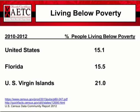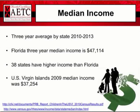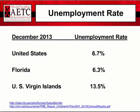Living in poverty between 2010 and 2012 in the United States is calculated at 15.1%. Florida is higher at 15.5%, and the U.S. Virgin Islands is significantly higher at 21%. The median income is a three-year average from 2010 to 2013; for Florida during that period, the median income was $47,114. Thirty-eight states have higher income than Florida, and the U.S. Virgin Islands' 2009 median income was $37,254. In December 2013, the United States had a 6.7% unemployment rate, Florida had 6.3%, and the U.S. Virgin Islands had a significantly higher rate of 13.5%.